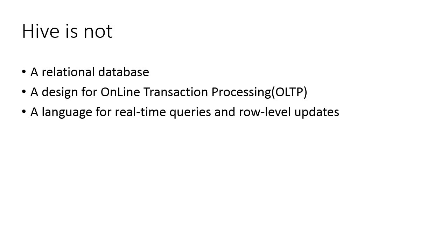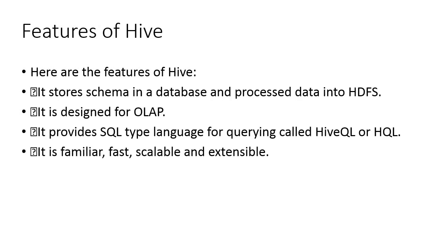Before 2008, all the data processing infrastructure in Facebook was built around a data warehouse based on commercial RDBMS. The features of Hive include: it stores schema in a database and processes data into HDFS; it is designed for OLAP, used for analysis purposes; it provides a SQL-type language for querying called HiveQL or HQL; and it is familiar, fast, scalable, and extensible.